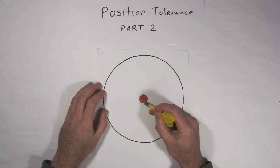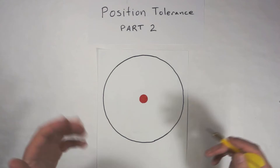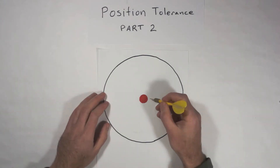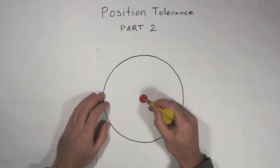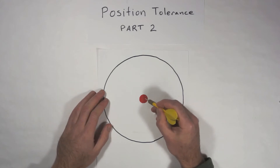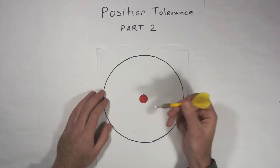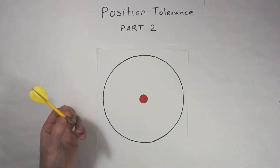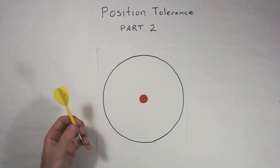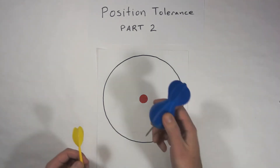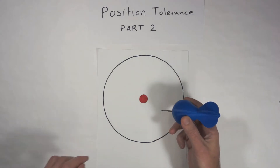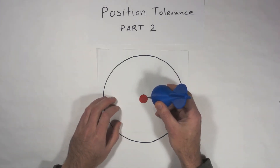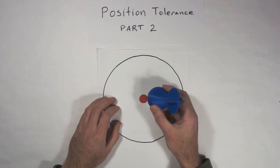We all intuitively know that as long as that dart lands somewhere in the bullseye, it's a bullseye. We don't say you didn't get a bullseye because you didn't get right in the middle. As long as you land in there somewhere, you've got a bullseye. This dart is too skinny to make sense for manufacturing, so I go with a big wide one — same story: get that tip somewhere in here.